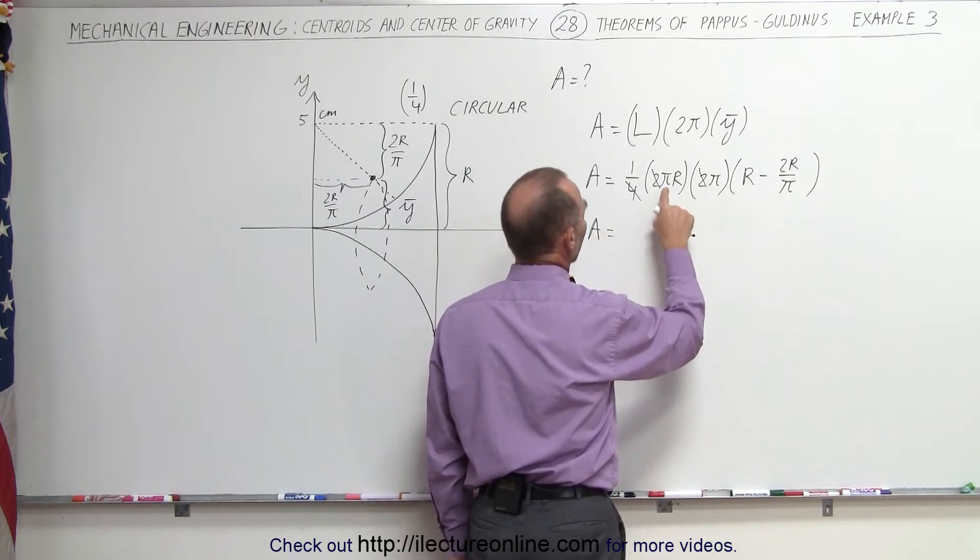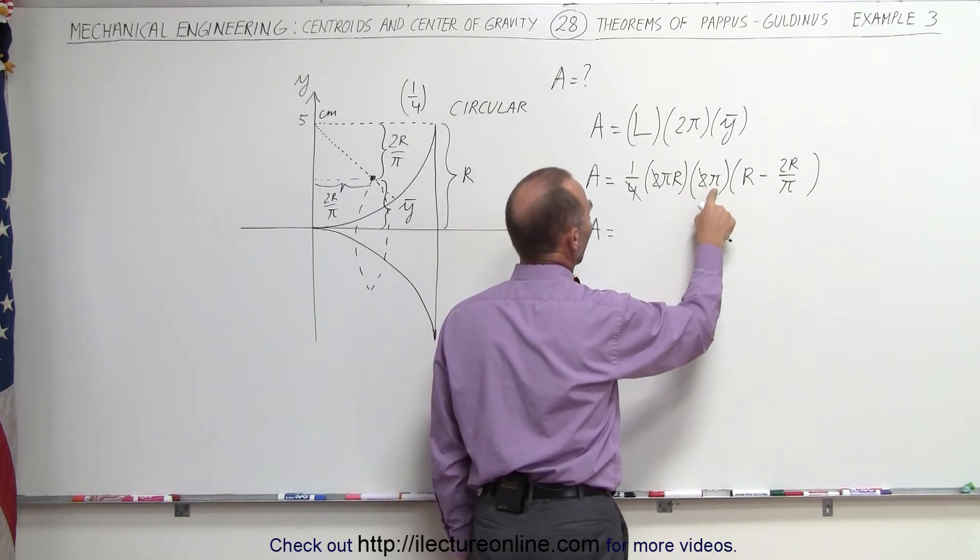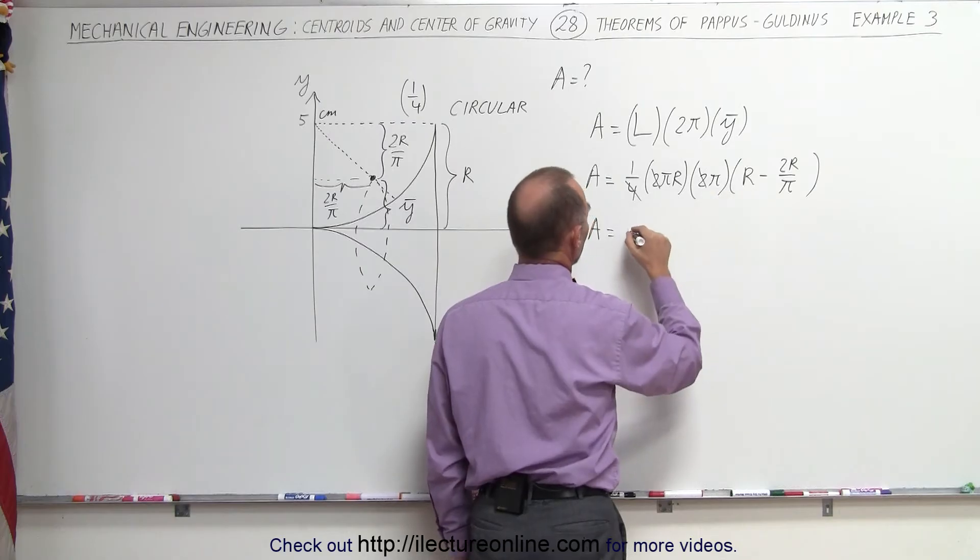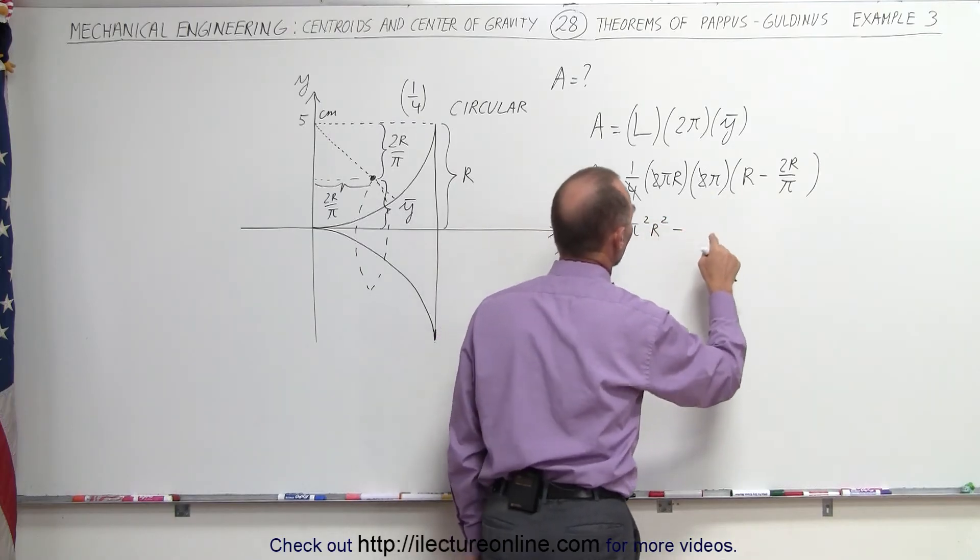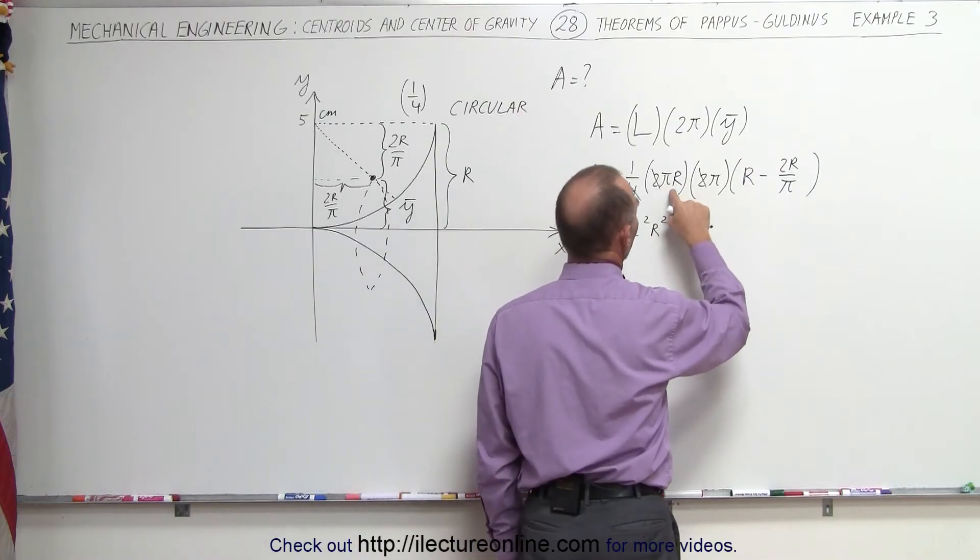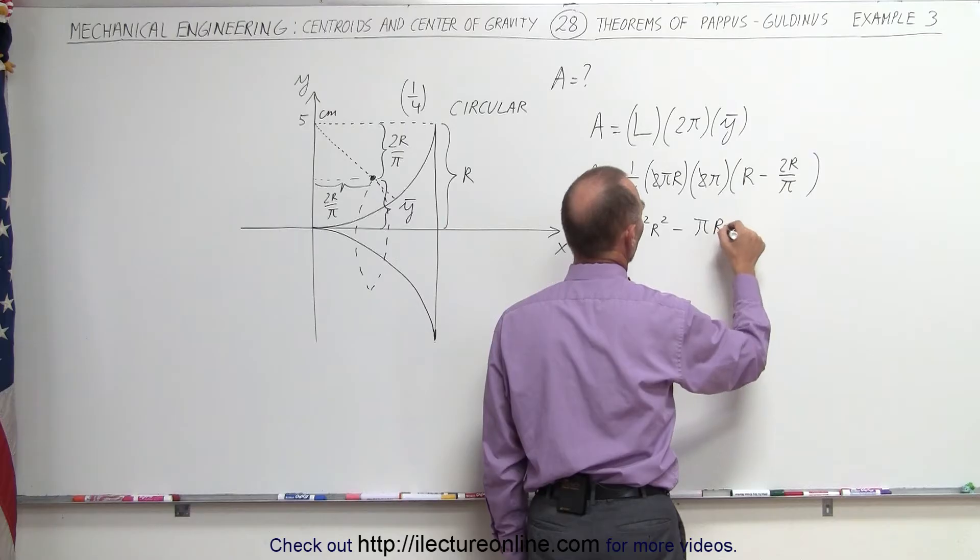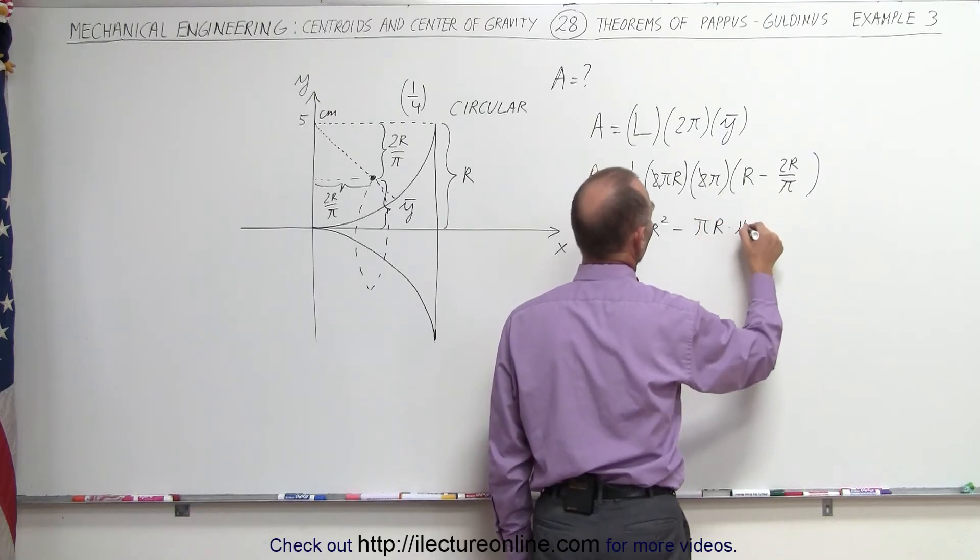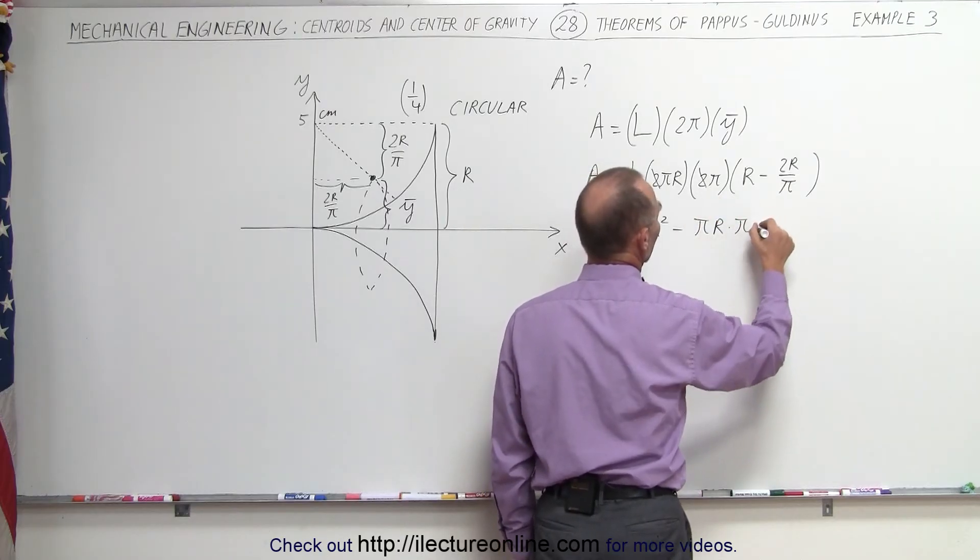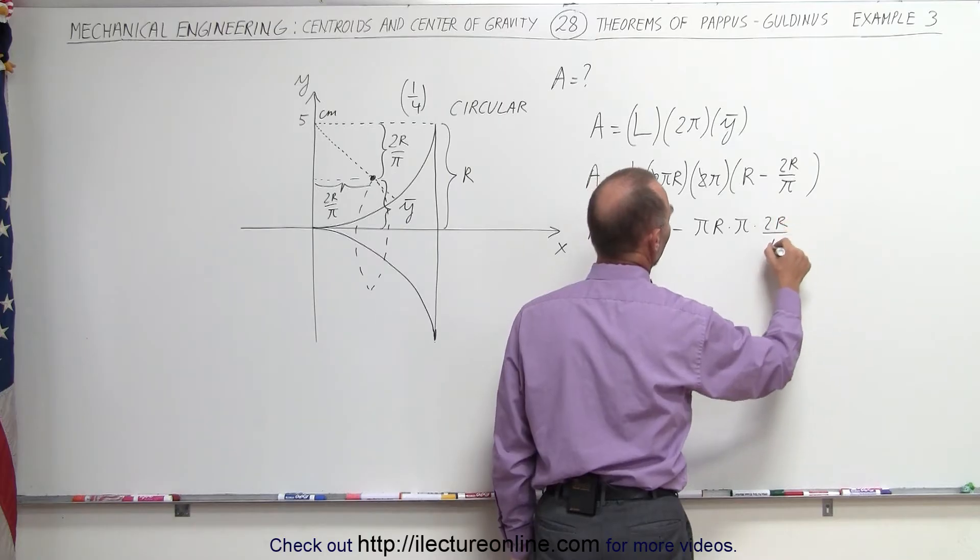The area is equal to πr times π times r. That would be π²r² minus π² times r. Let's just write it out.